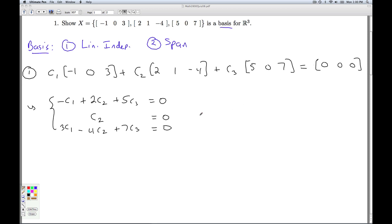So I'm going to write this as a matrix equation. If I write this as Ax = D, then my matrix A is the coefficient matrix, which is [-1, 2, 5; 0, 1, 0; 3, -4, 7].